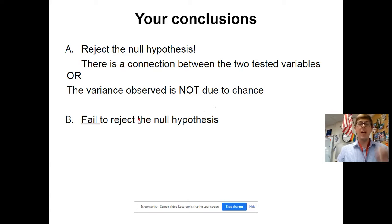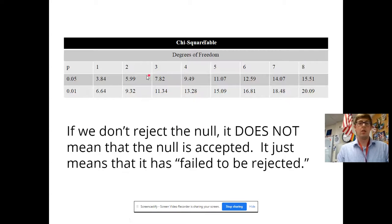Now, if you fail to reject the null hypothesis, which was not in this scenario, then the variance is due to chance, or there is no connection between the two tested variables. So again, if we don't reject the null hypothesis, we do not accept the null hypothesis. We just say we failed to reject it. The variance, the change, was just due to chance. And that is what you need to do for a chi-square hypothesis test. I certainly hope that was helpful.